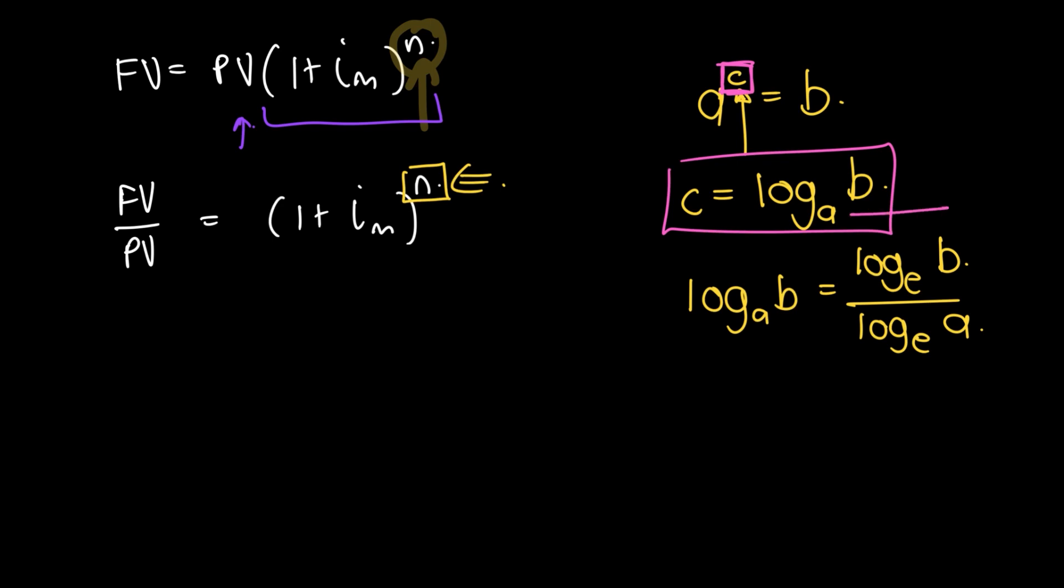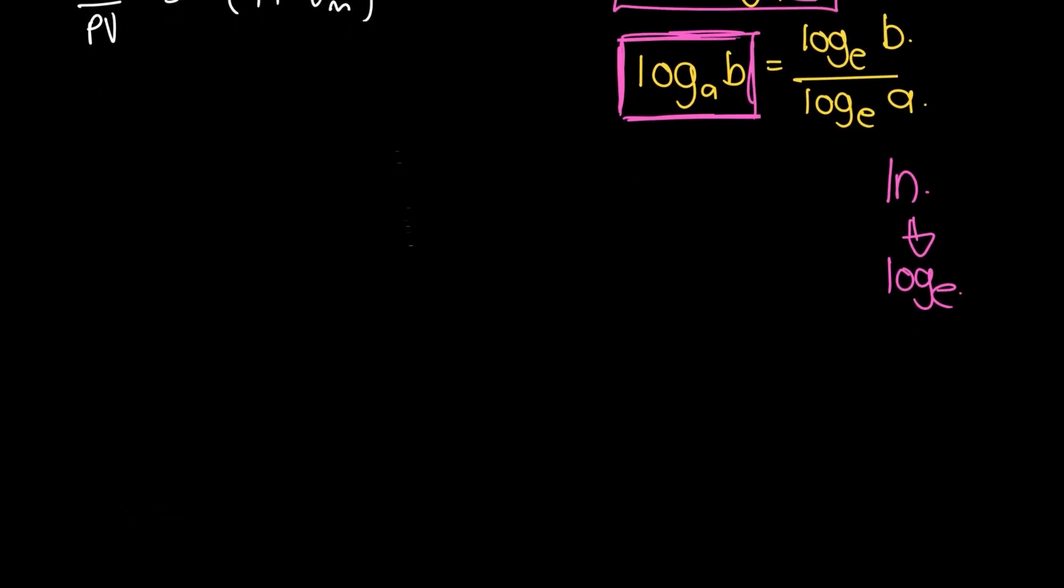But the fact that the log base a is there makes things a bit challenging, a bit awkward. We can rewrite this in terms of a base that we're comfortable with. Instead of log base 7, we can rewrite it in terms of log base 10 or log base e. e is just the natural log. There's actually a button on your calculator called ln.